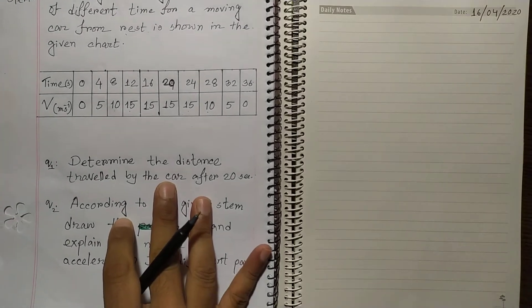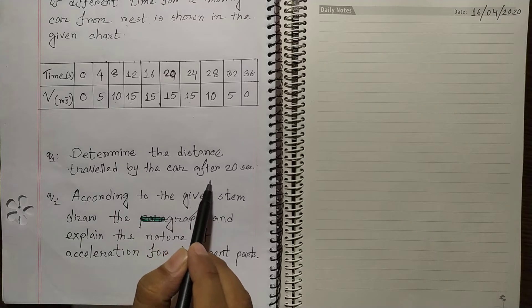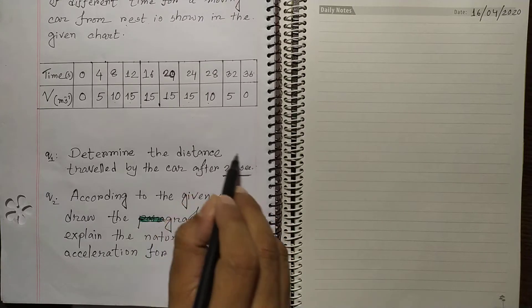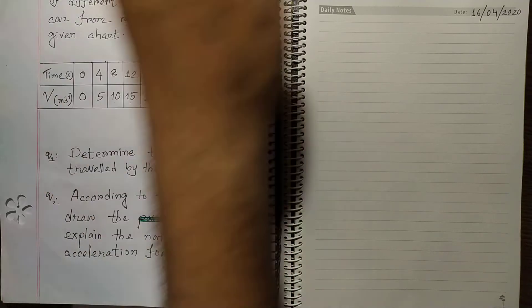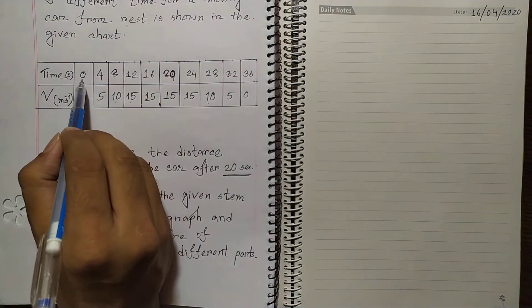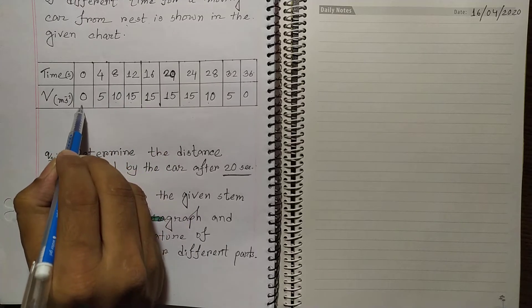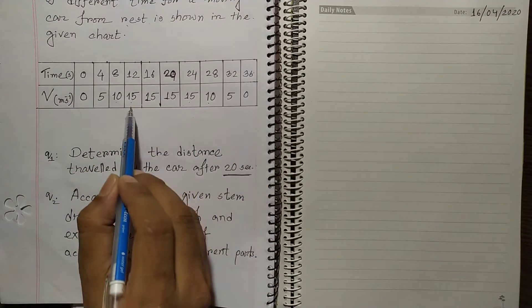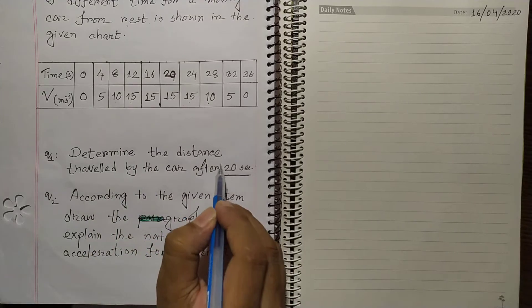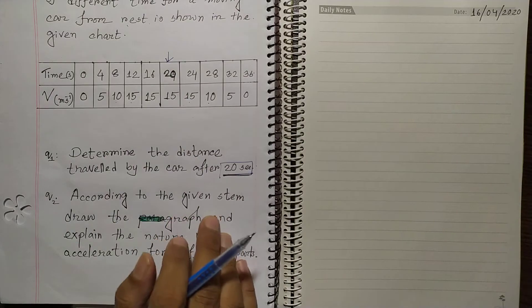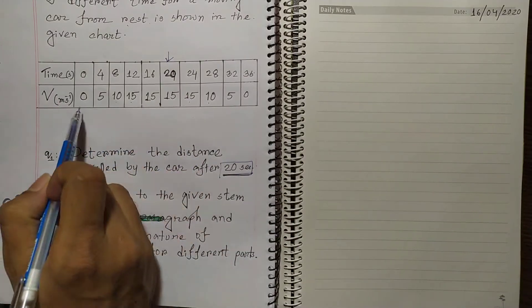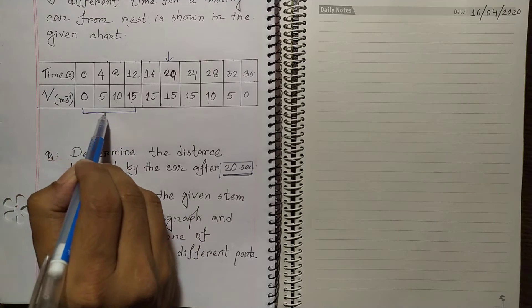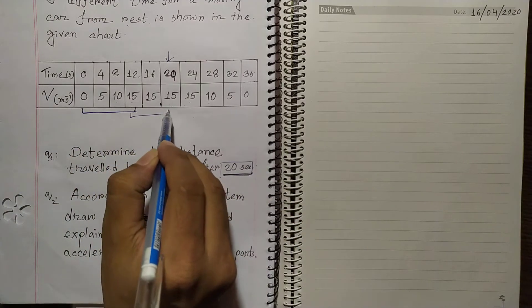The question asks: determine the distance traveled by the car after 20 seconds. From the data, we can see that from 0 to 12 seconds the velocity was increasing, and from 12 to 24 seconds the velocity was the same. Since we need the distance till 20 seconds, we divide the journey into two segments.